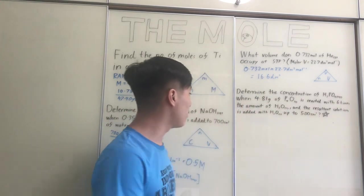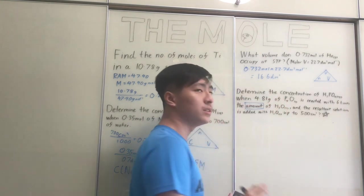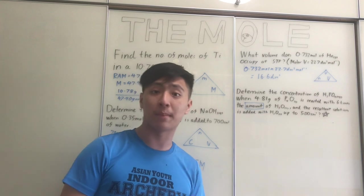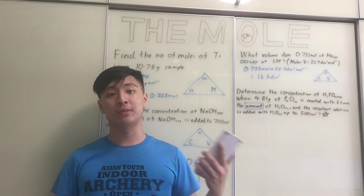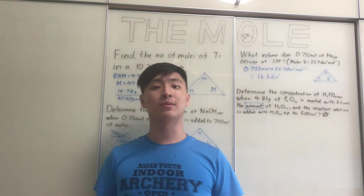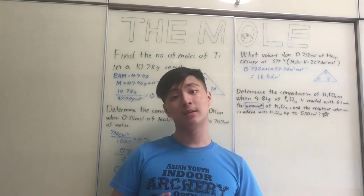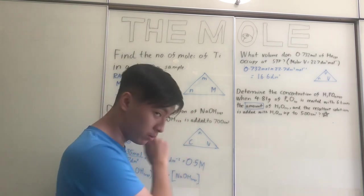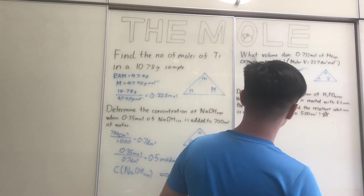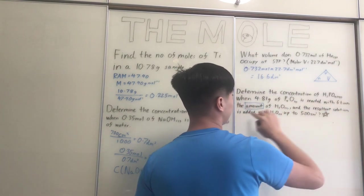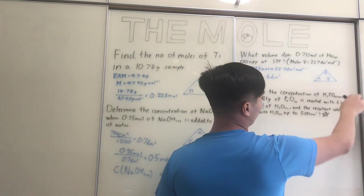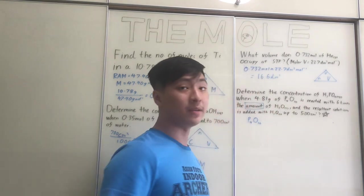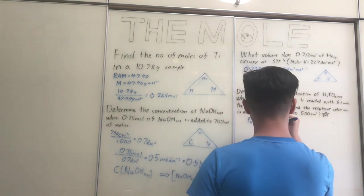Let me clarify: 'amount' in chemistry only refers to the number of moles — not mass, not volume, not concentration. Amount = moles only. So the question says P₄O₁₀ reacts with 6 times the molar amount of water. We need to construct a balanced chemical equation: P₄O₁₀(s) + 6H₂O(l) → 4H₃PO₄. Checking the balance: 4 phosphorus, 16 oxygens, 12 hydrogens on each side — the equation is balanced.